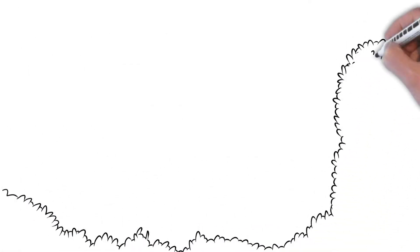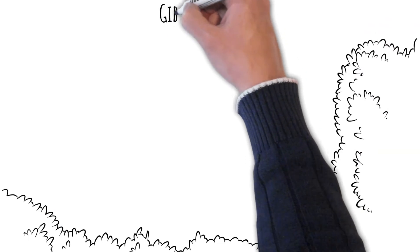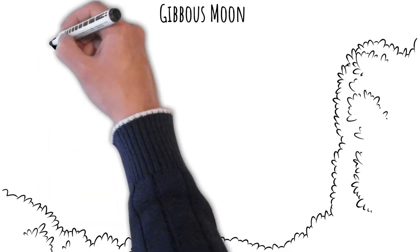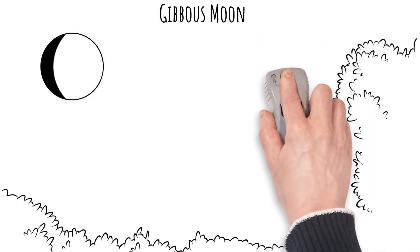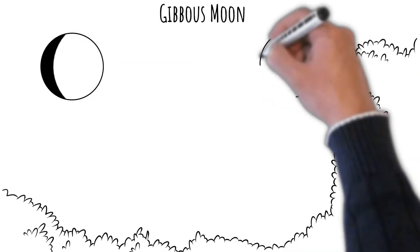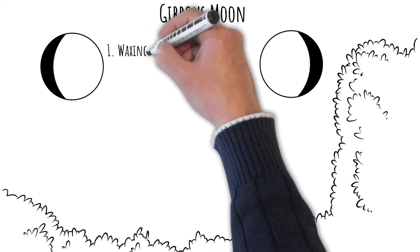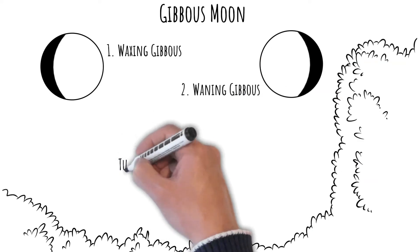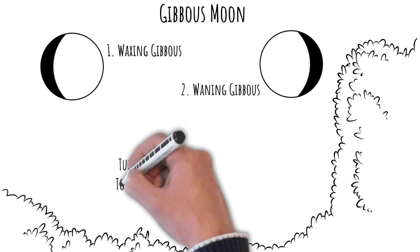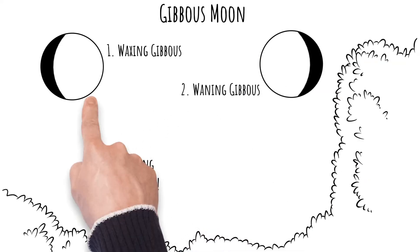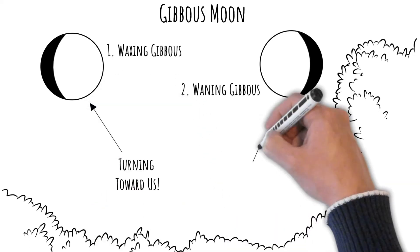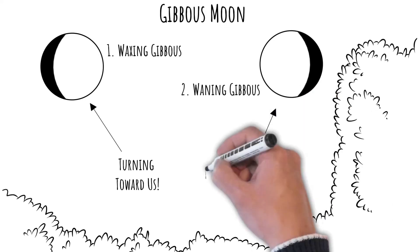The next moon cycle is the gibbous cycle. Now most of the moon's day side has come into view and the moon appears brighter in the sky, but it is not quite showing its whole illuminated side. The waxing gibbous is when the illuminated side is in the process of turning toward us, and the waning gibbous is when the illuminated side is just beginning the process of turning away from us.